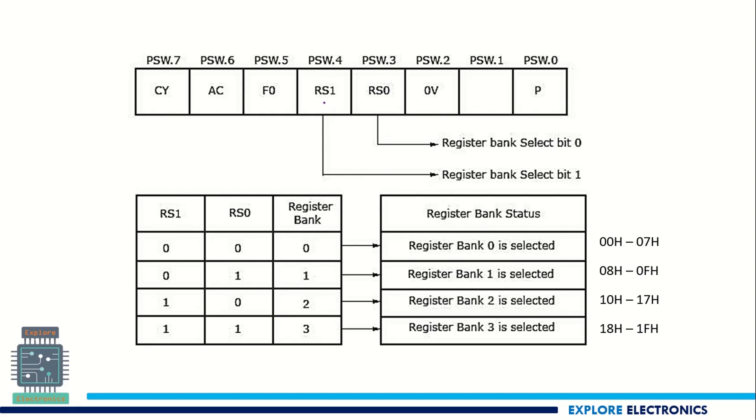The first one we are taking is RS1 and RS0 of the third and fourth bit of PSW register. The register bank select is indicated by these two. If RS1 and RS0 is set as 00 we are selecting bank 0. Register bank 0 is selected and the address will be 00H to 07H. Similarly if we set 01 as RS1 and RS0, register bank 1 is selected, it is having the address 08H to 0FH.